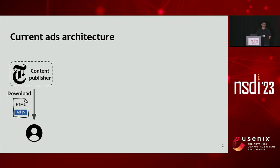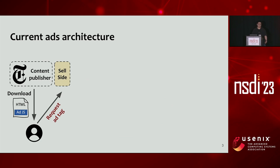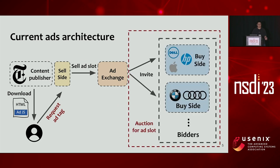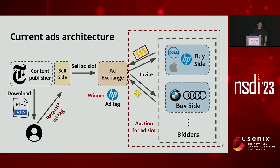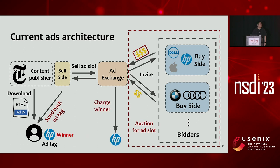Let's take a look at the current advertising architecture. When a user visits a content publisher's website such as the New York Times, your browser downloads an HTML page with embedded JavaScript. This JavaScript generates a request for an ad tag to a seller who wants to sell the ad slot to an ad exchange. The ad exchange selects and invites potential interested buyers, called bidders, who then generate bids based on how much they'll pay for different types of users.